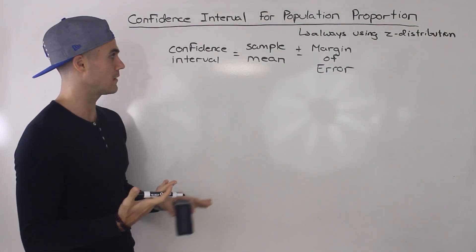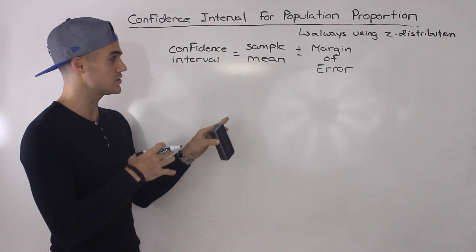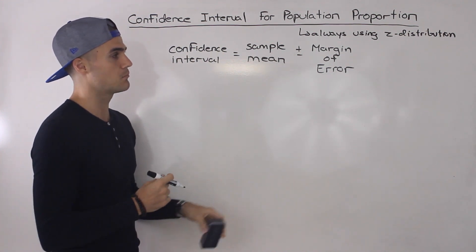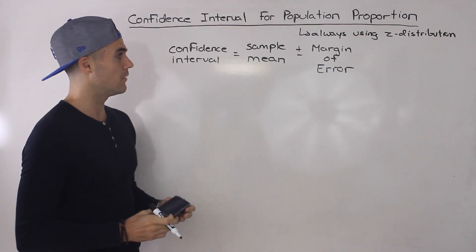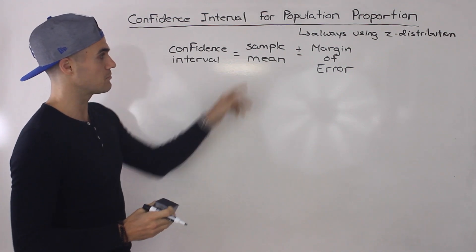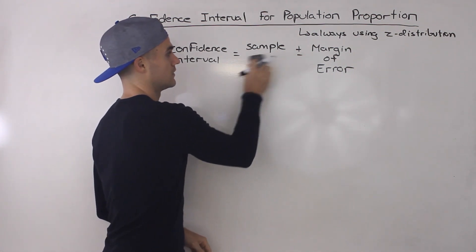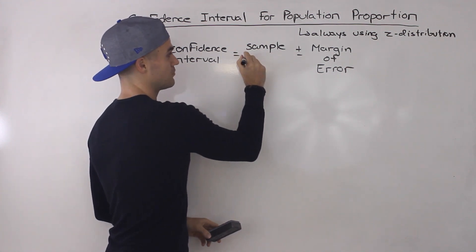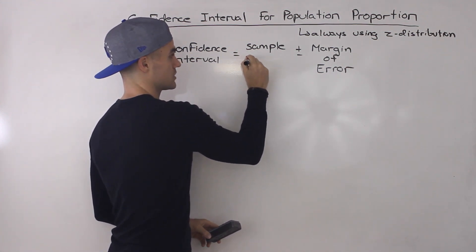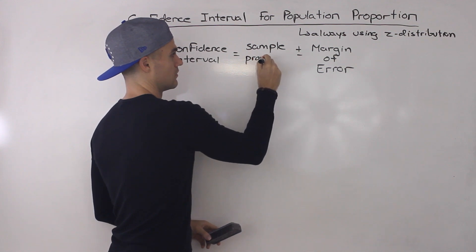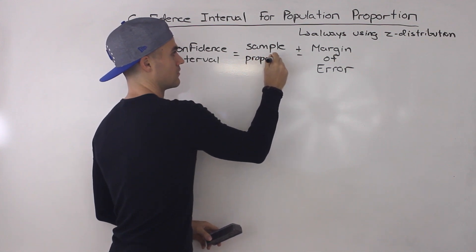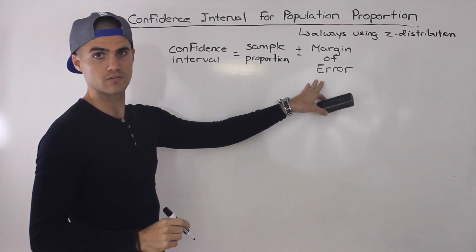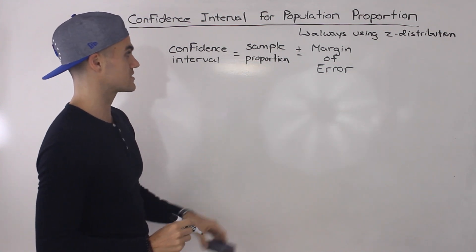To do a quick review: the confidence interval for a population mean was the sample mean plus or minus the margin of error. But we're not working with means anymore — here we're going to be working with proportions. So we take the sample proportion and add and subtract a margin of error in order to get that confidence interval.